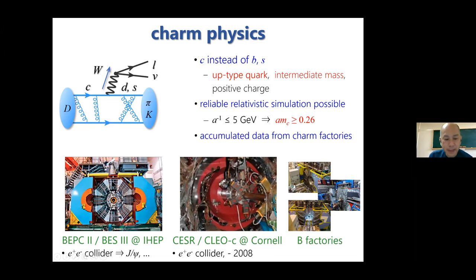One representative experiment is the BES III experiment in China. This is an e+e- collider to generate mainly the J/ψ meson and this machine has been in operation for more than 10 years and is still running. The CESR and the CLEO-c experiment was led by Cornell University. This is also an e+e- collider and its operation ended in 2008.